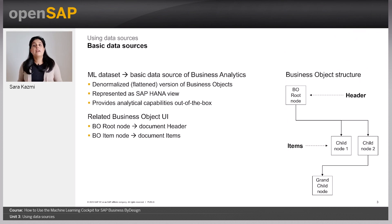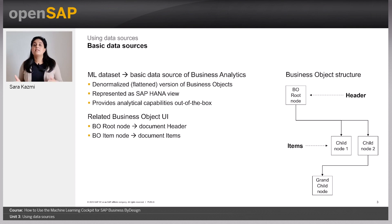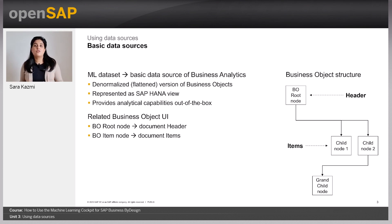On a technical level, every business document is represented as a business object having a hierarchical structure. There is always one root node which represents the document header and some child node types. Typically, there is always one child node that represents document items. These child nodes can have their own child nodes as well. For example, in case of a sales quote, all sales quote header attributes are stored in the root node and all sales quote item attributes are stored in the item child node. The problem is that ML datasets do not support hierarchical structures.